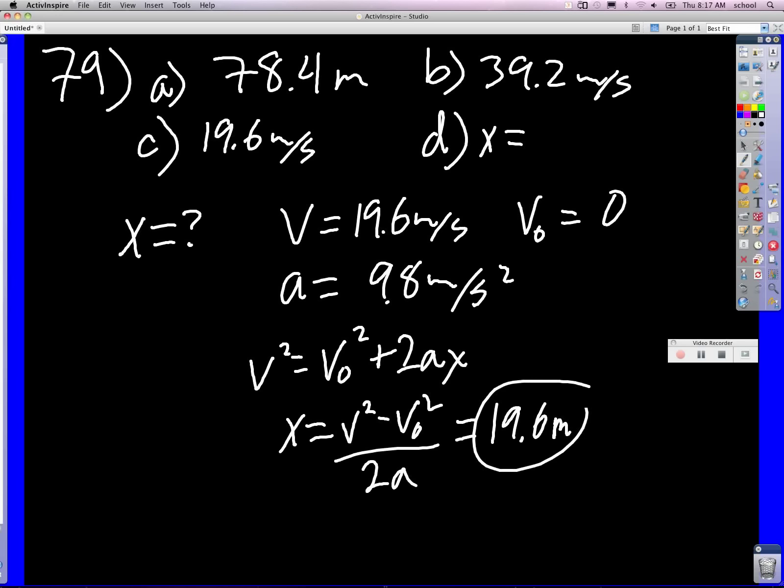If I wanted to, and I'll pick a different color so we don't get too confused. If I wanted to do this differently, and it's v equals v zero plus at. So I know this, and from that I can say t is equal to v over a.